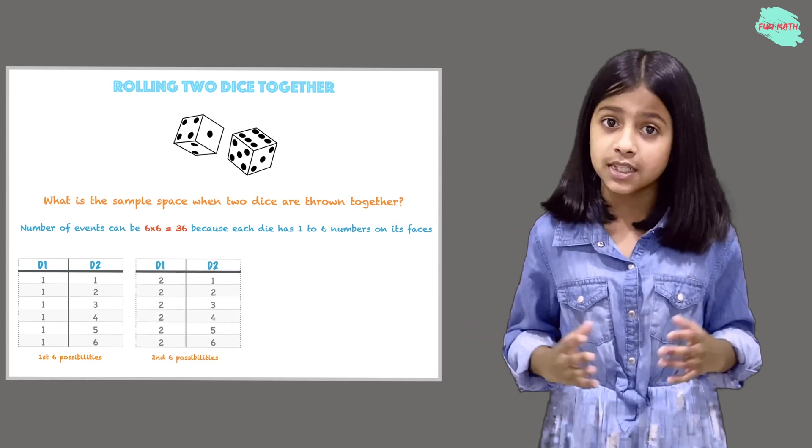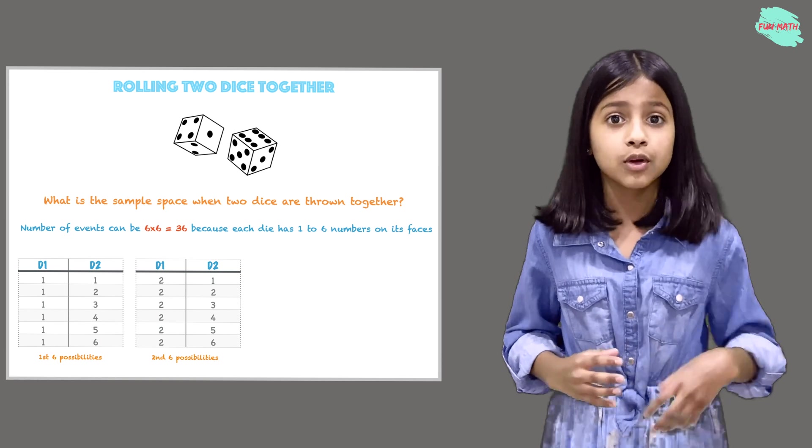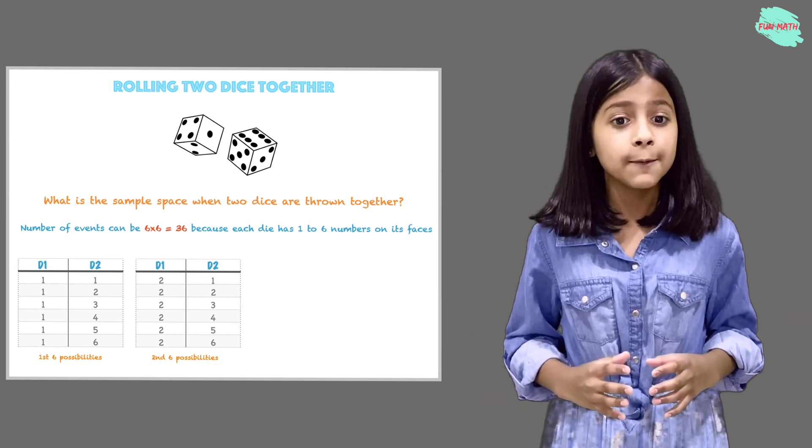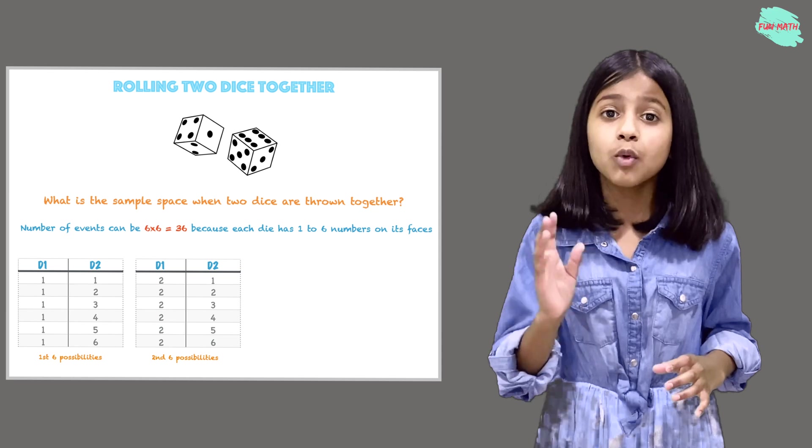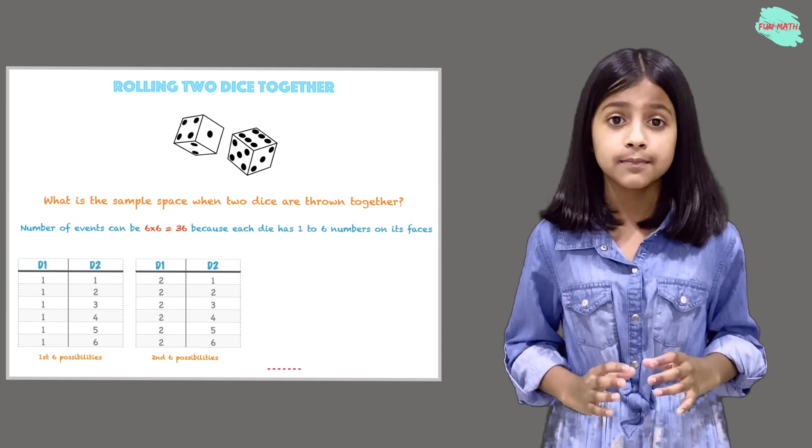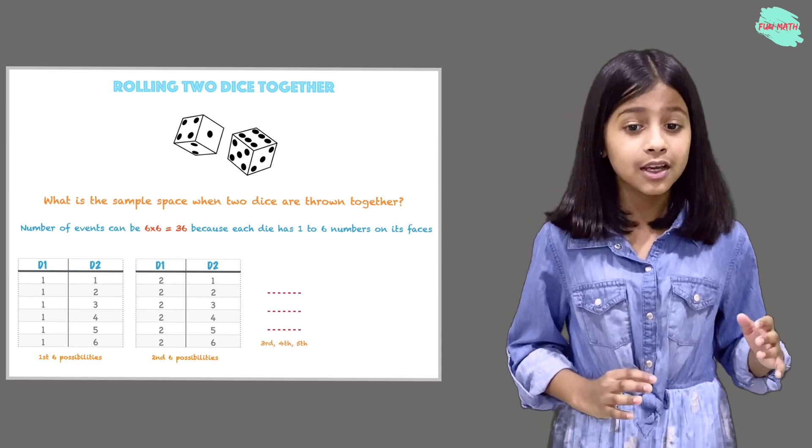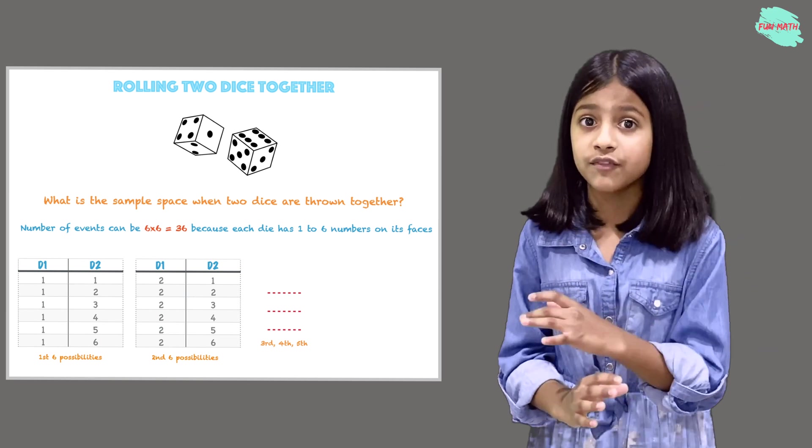The second 6 possibilities we can get when we roll d1 and d2, we can get 2 on d1 and 1 through 6 on d2. Similarly for 3rd, 4th, and 5th possibilities.